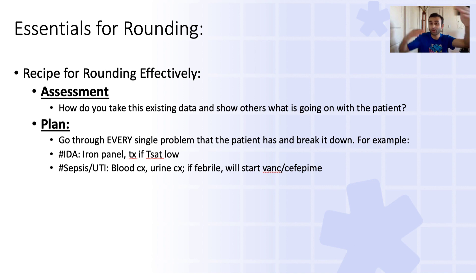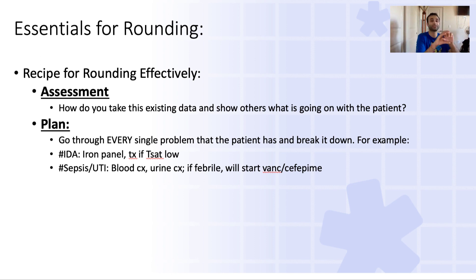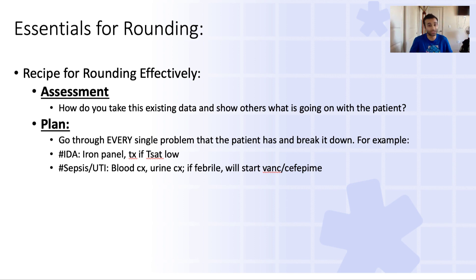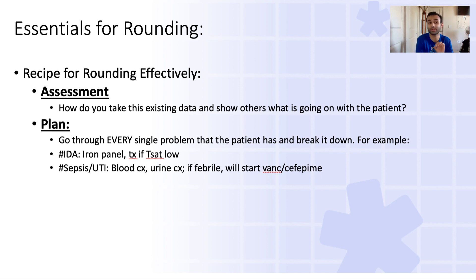Then lastly is the plan, where you go through every single issue the patient has and talk about how you're addressing it. For endocarditis: we did a TTE showing evidence of endocarditis, got blood cultures showing this, consulted ID and they recommend this. Then the next problem — maybe the patient is hyponatremic, how are we working that up? Maybe they're hypokalemic, maybe they have abdominal distension. For each problem, you go through a plan. Your presentation is mostly going to be the plan, but you can't do that well unless you have a good subjective, objective, and assessment.